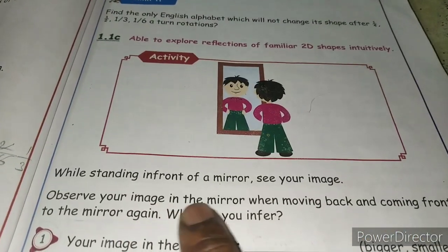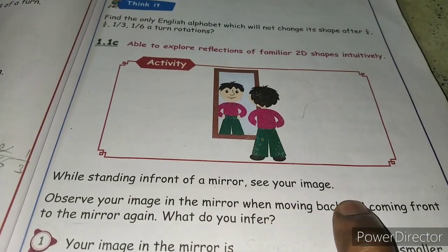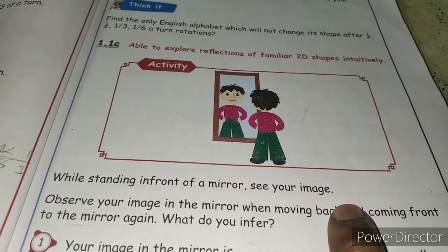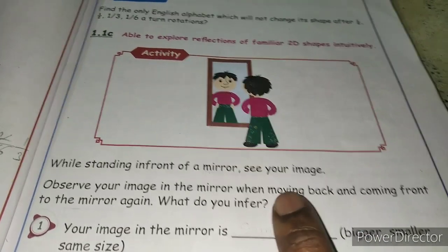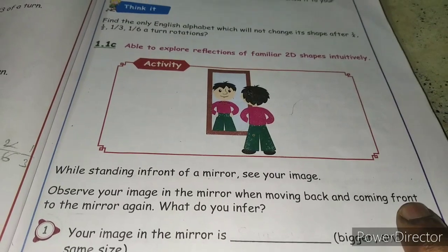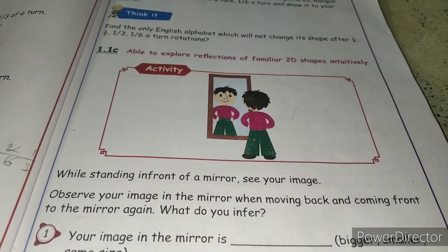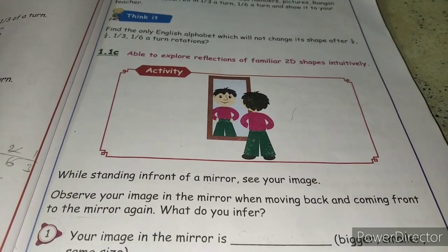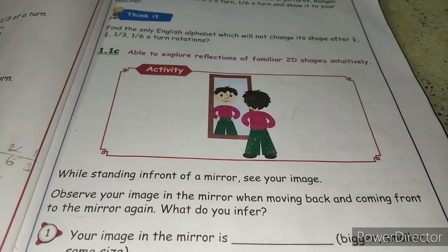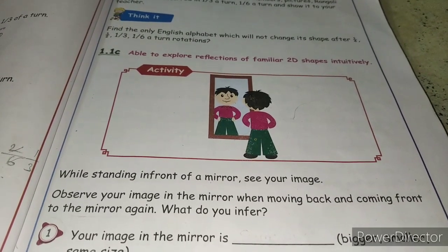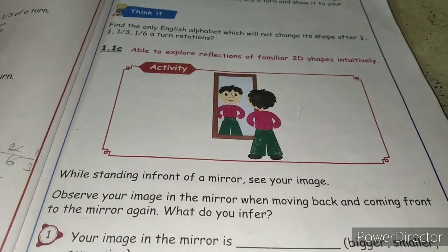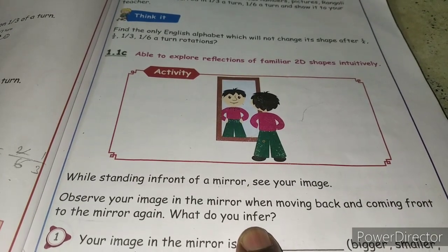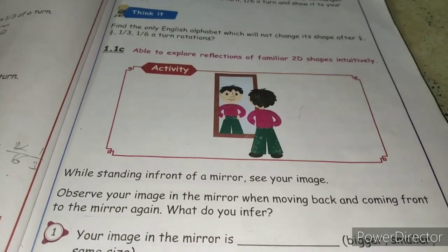While standing in front of your mirror, see your image in the mirror. Observe your image in the mirror when moving back and coming forward. When you are drawing near a mirror, what do you perceive? What do you infer?